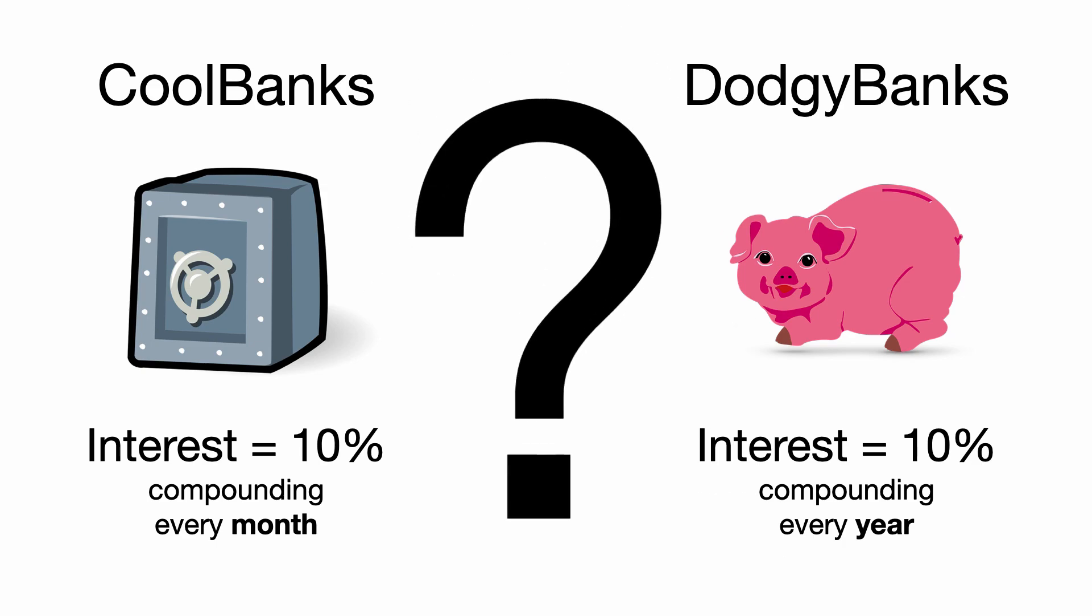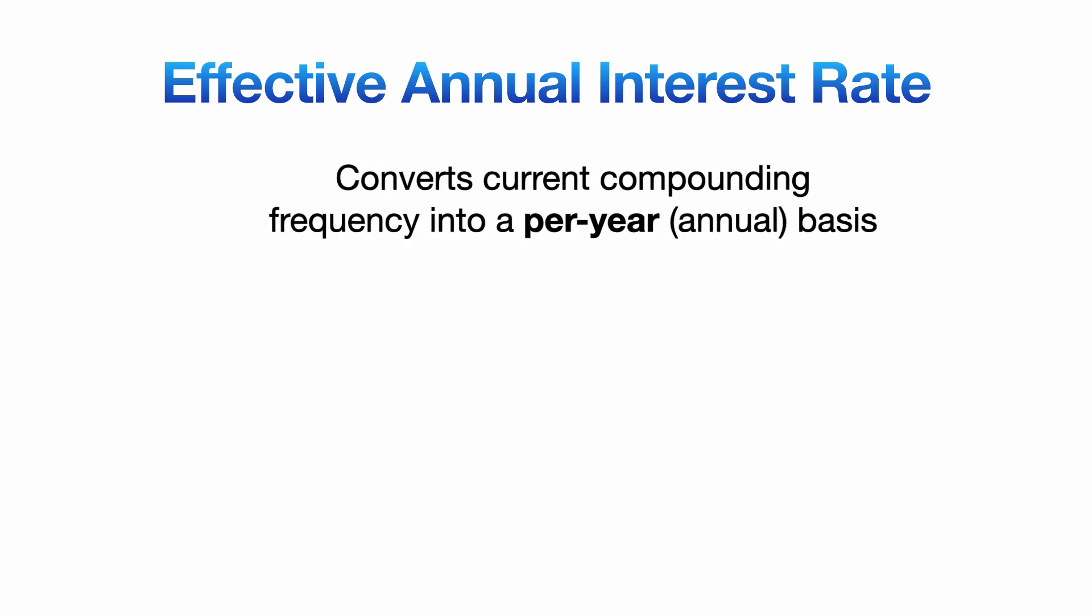Now Cool Banks is charging you 10% interest compounding every month, and Dodgy Banks is also charging 10% interest, but compounding every year instead. Which bank should we be borrowing money from? You might think to choose Cool Banks because why would you ever choose a bank called Dodgy Banks? But how can we really know for sure? We can use this thing called Effective Annual Interest Rate to balance everything out and help make our decision. How does it work?